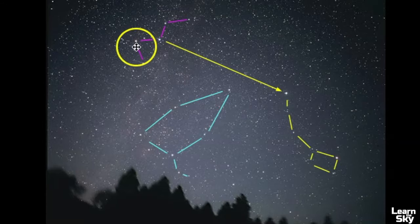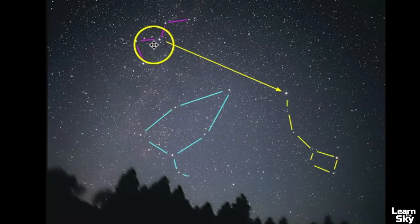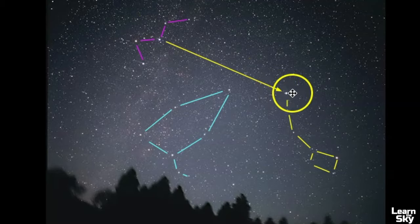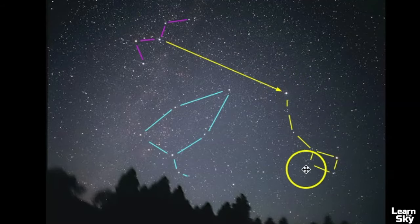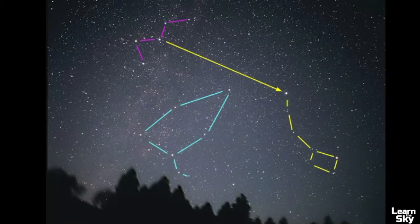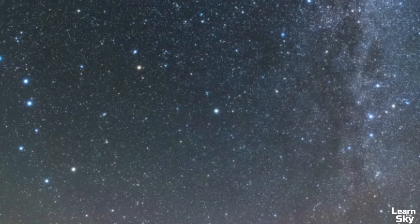If you have Cassiopeia right here, you can use that center star to guide you right towards Polaris. Here's the Little Dipper or Ursa Minor, and right here is Cepheus — another circumpolar constellation as well. I want to take a quick look at this picture because it has a lot of the constellations or asterisms we just discussed.